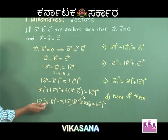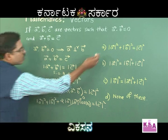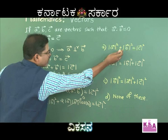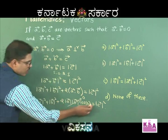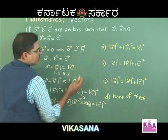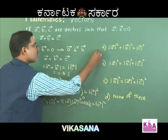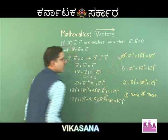Therefore, the correct answer is: magnitude of vector A squared plus magnitude of vector B squared is equal to magnitude of vector C squared. Correct answer is option A.